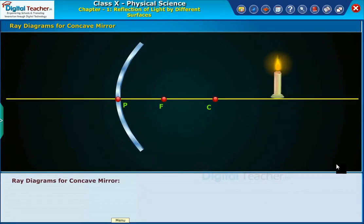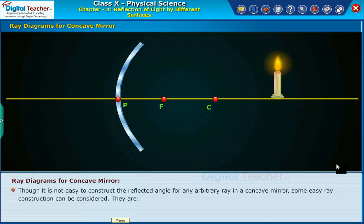Ray diagrams with concave mirror. Though it is not easy to construct the reflected angle for any arbitrary ray in a concave mirror, some easy ray construction can be considered.